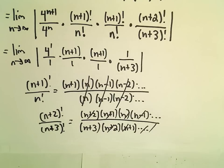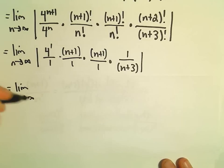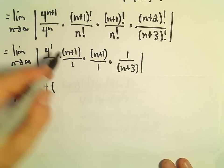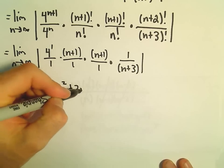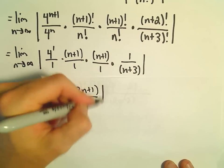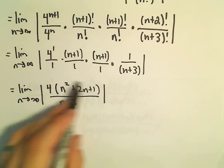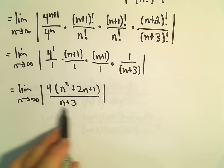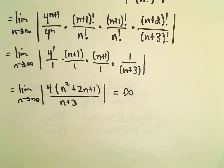Okay, so now we're taking the limit of this stuff. We've got the limit as n goes to infinity. Notice if we multiply n plus 1 and n plus 1, we would get n squared plus 2n plus 1 over n plus 3. Well, this is a case where we're taking the limit as n goes to infinity. The degree of the numerator is larger than the degree of the denominator. So this is just going to go off to positive infinity.